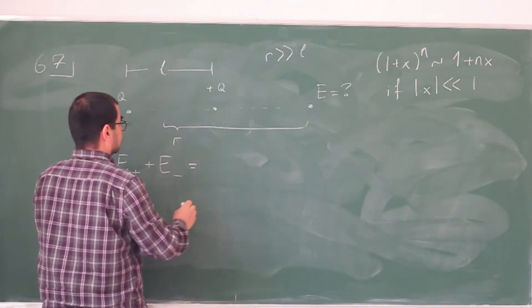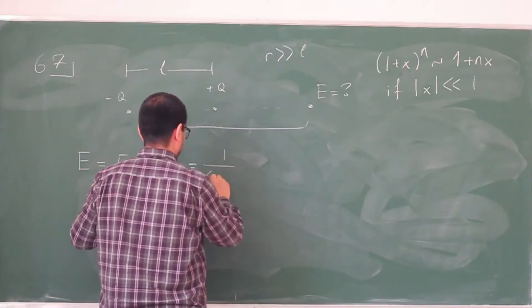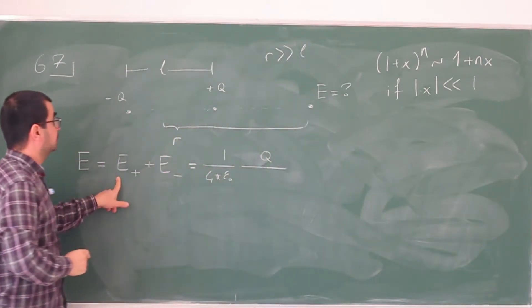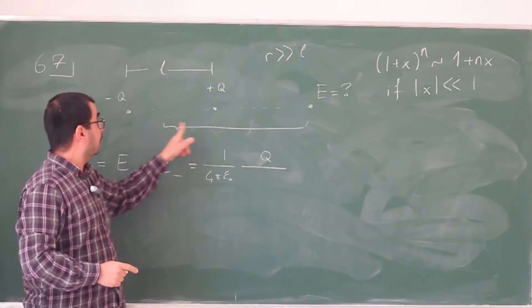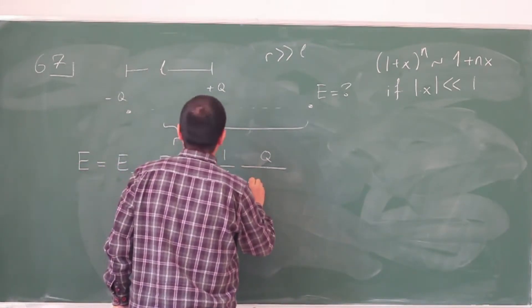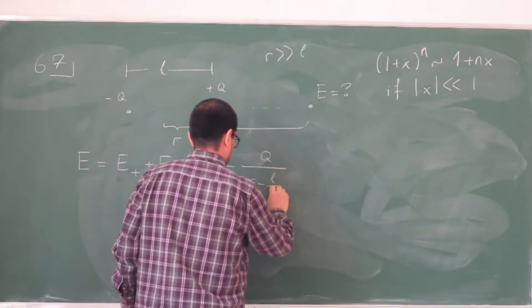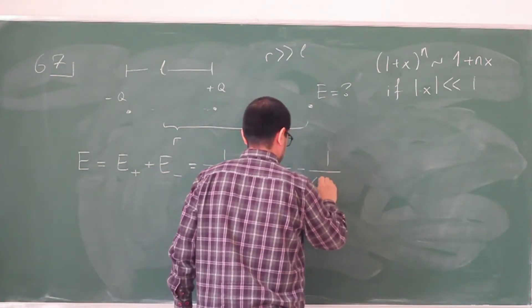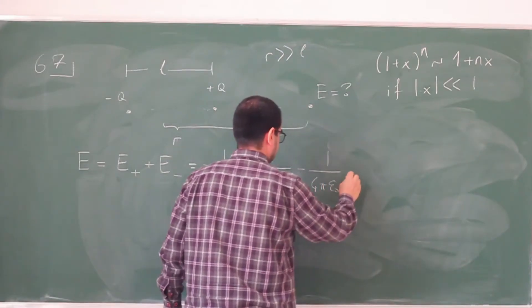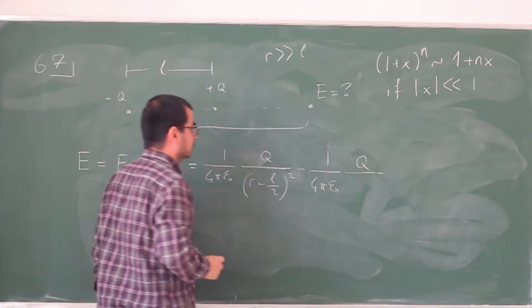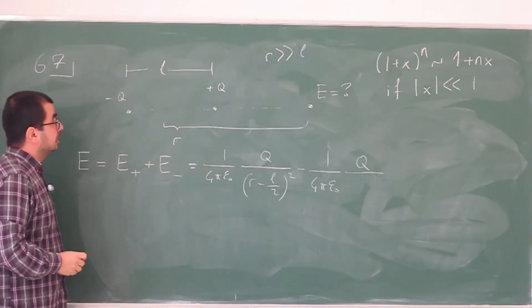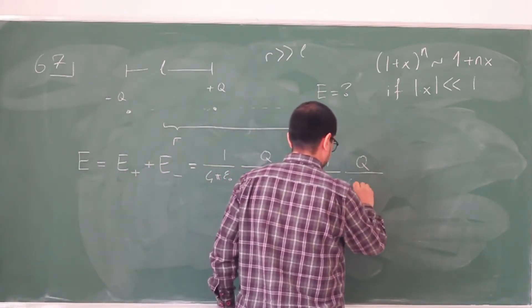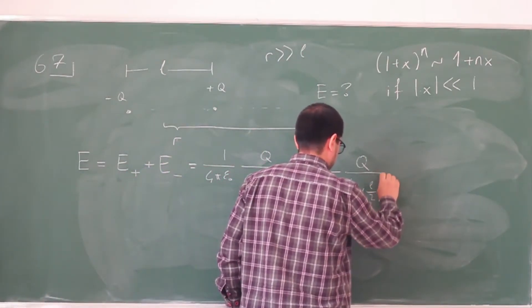So let's write this down. This one is going to be 1 over 4π epsilon naught q divided by the distance squared. That distance is r minus L over 2 squared. Now I'm going to have a minus sign here because this q itself is minus, and the distance for that one is r plus L over 2 squared.